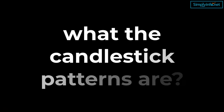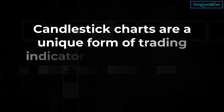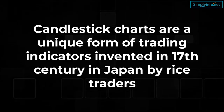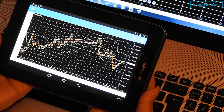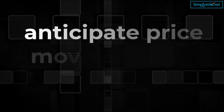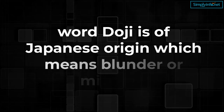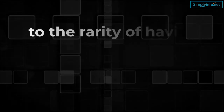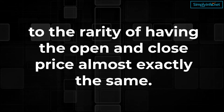But first, let us understand what candlestick patterns are. Candlestick charts are a unique form of trading indicators invented in the 17th century in Japan by rice traders. These are a type of price chart used in technical analysis that displays the high, low, open and closing prices of a security for a specific period. They used these patterns to anticipate price movements to trade. The word doji is of Japanese origin which means blunder or mistake, referring to the rarity of having the open and close price almost exactly the same.